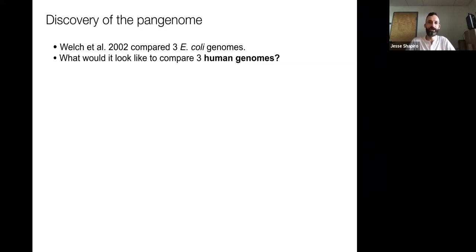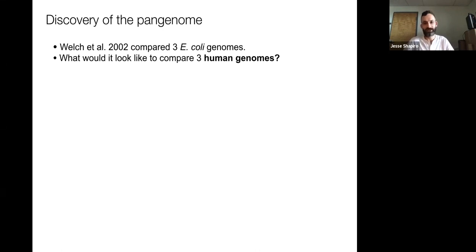I'm going to start with a little bit of history — the discovery of the pan genome. This is the concept that different members of a species can encode different sets of genes. This dates back more or less to the early 2000s. In 2002, the study by Welch et al. compared three E. coli genomes that had been sequenced and looked at the number of shared genes between them.